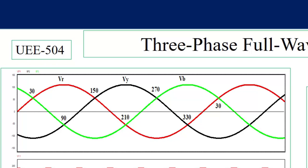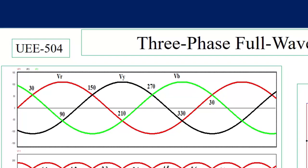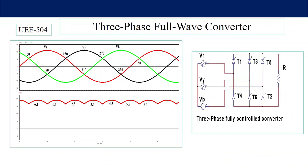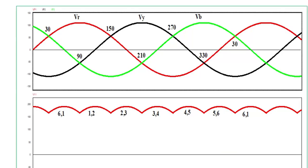For the negative voltages: between 30 and 90 degrees Vy is negative maximum; from 90 to 210 degrees Vb is negative maximum; and from 210 to 330 degrees Vr is negative maximum. As discussed, out of T1, T3, and T5 the thyristor with maximum positive voltage will be on, and out of T4, T6, and T2 the thyristor with maximum negative voltage will be on.